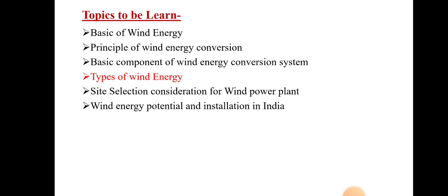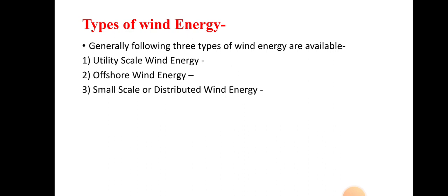In today's lecture, we have to see the main important point, that is the types of wind energy. Let us see how many types of wind energy are available on the earth. Generally, following three types of wind energy are available: first, utility scale wind energy; second, offshore wind energy; and third, small scale or distributed wind energy.